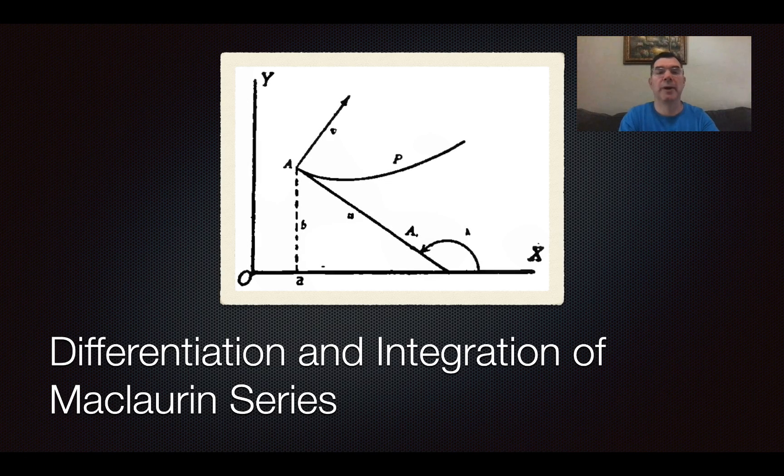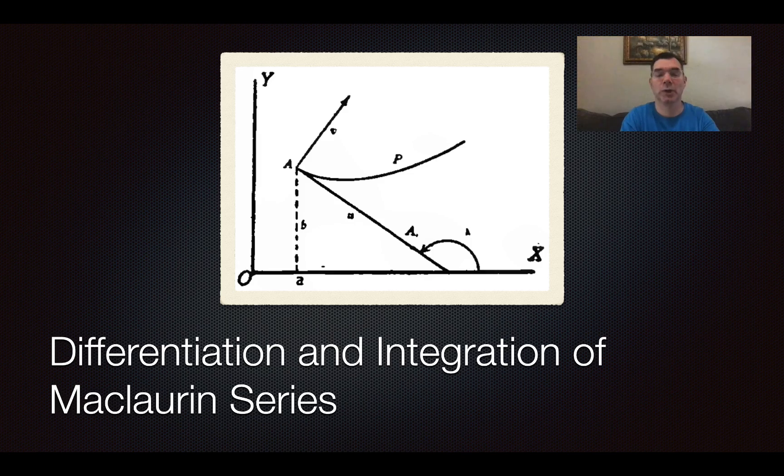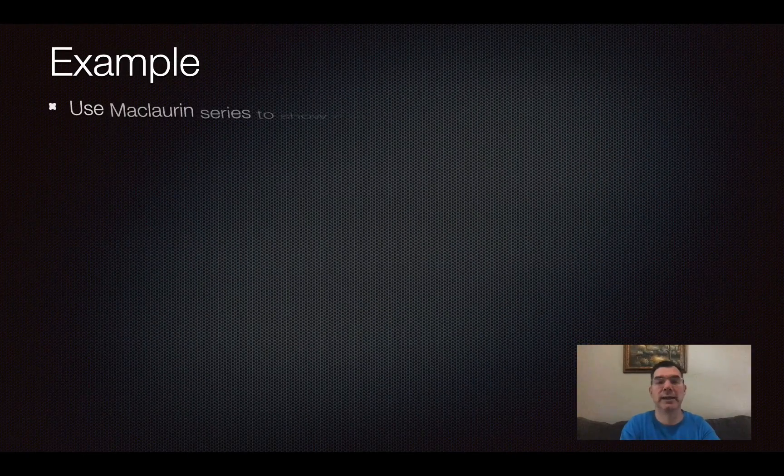Hello again. Today we're going to be talking about how to differentiate and integrate Maclaurin series, which is not really a difficult process because a Maclaurin series is basically just a bunch of terms that are being added or subtracted. According to the rules of differentiation and integration, all you would have to do is find the derivative or the antiderivative term by term. There would be no product rule or quotient rule involved. So let's just look at some examples.